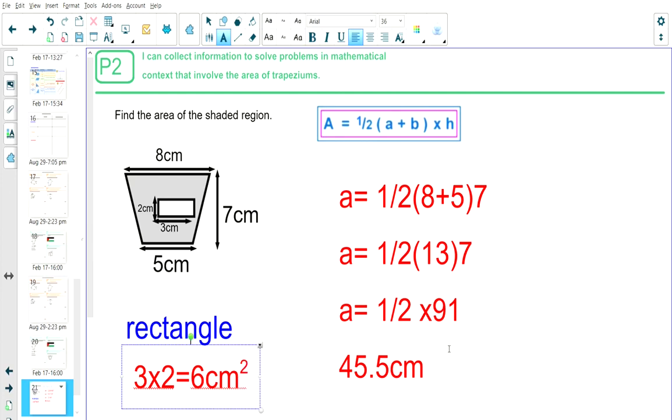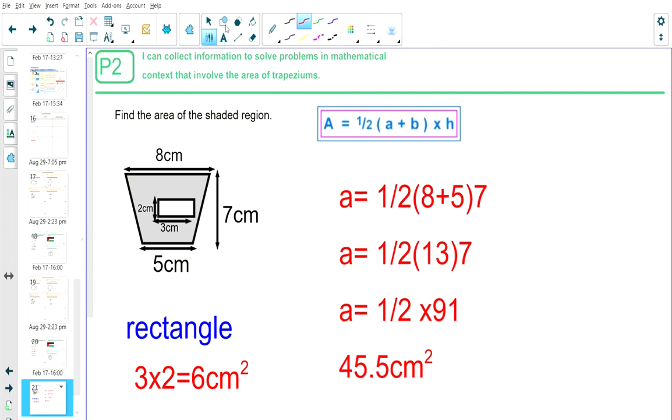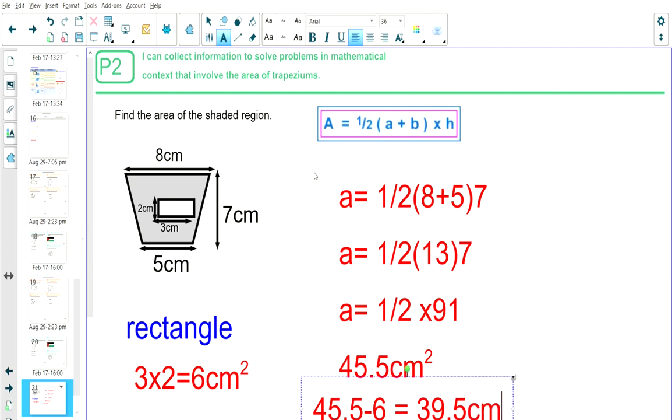Next, I am asked to find the area of the shaded region. The shaded region, to calculate the area of the shaded region, all I have to do is subtract the area of the trapezium from the rectangle. So that's going to be 45.5, take away 6, which gives me 39.5 centimeters squared.